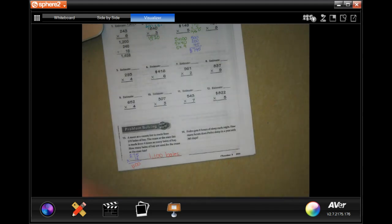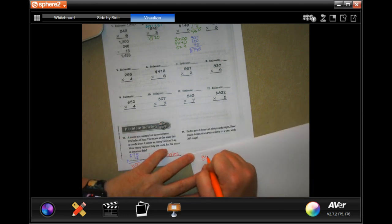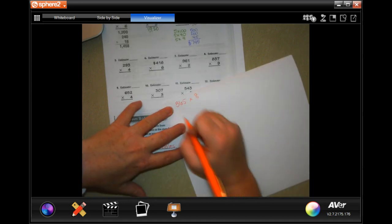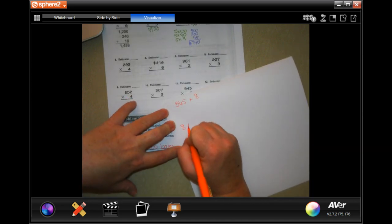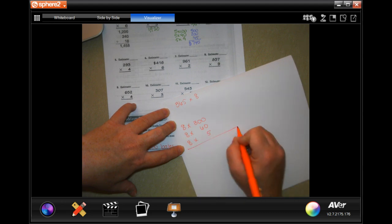So let's try number 14. Pedro gets 8 hours of sleep each night. How many hours does Pedro get in a year with 365 days? So 365 times 8. So we need to do 8 times 300, 8 times 60, and 8 times 5. And then we're going to add those up.